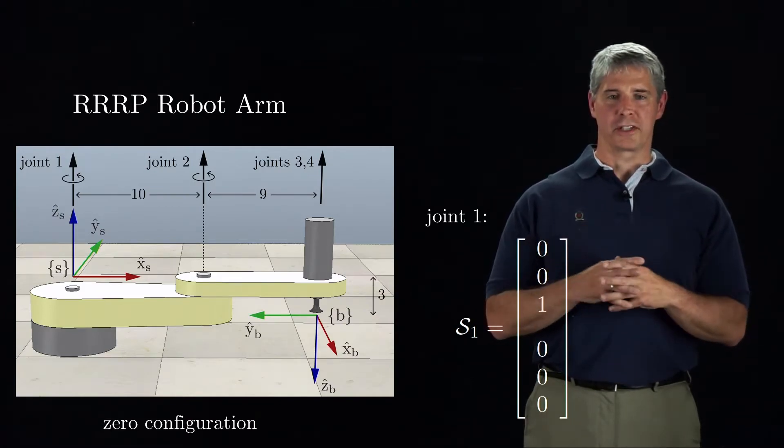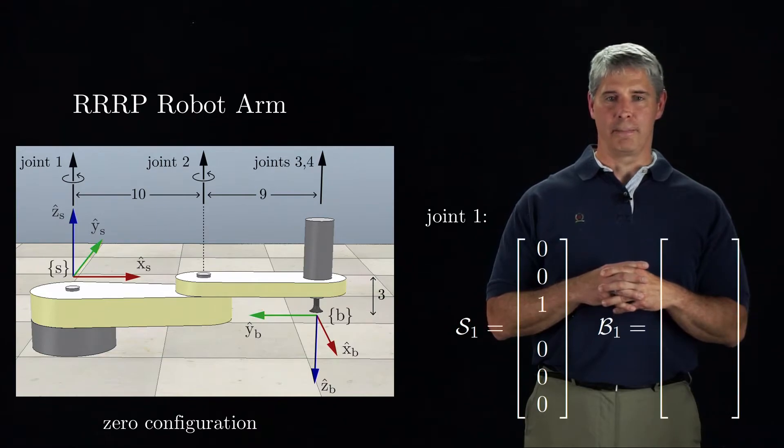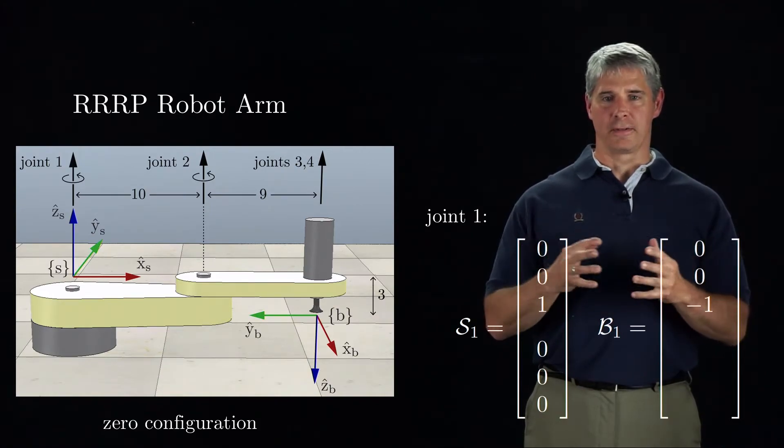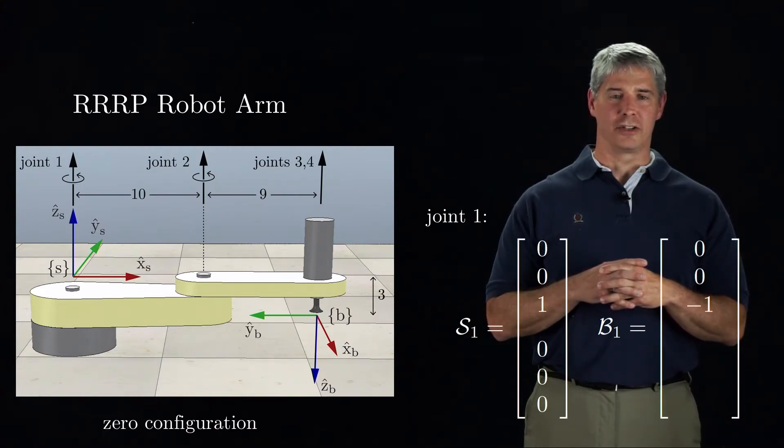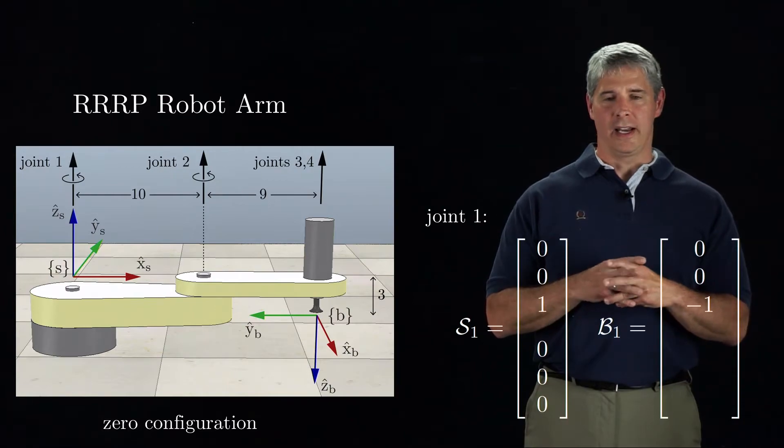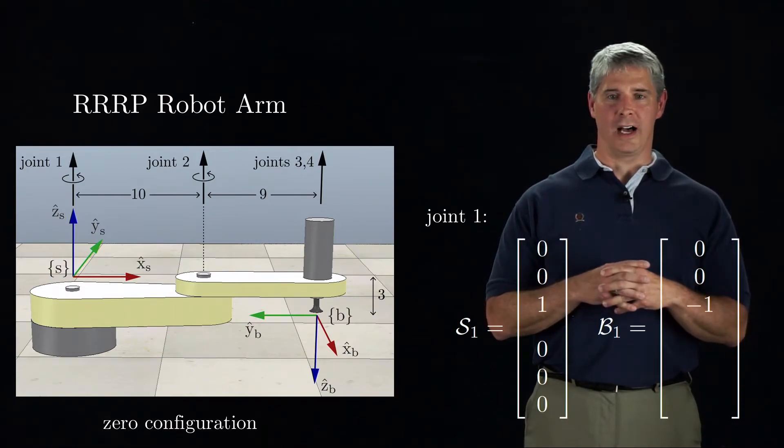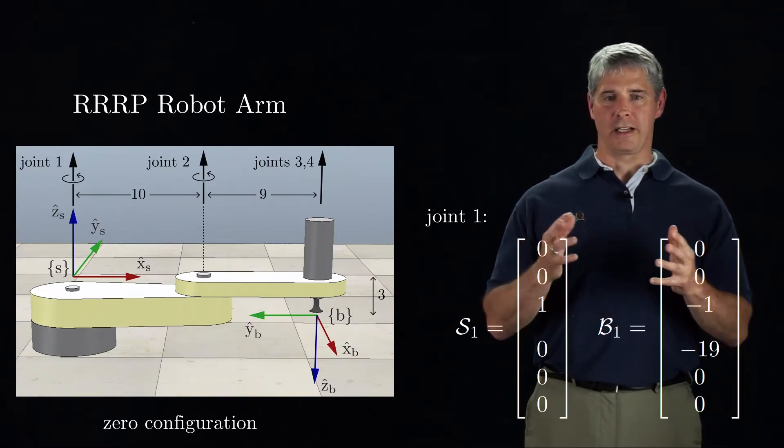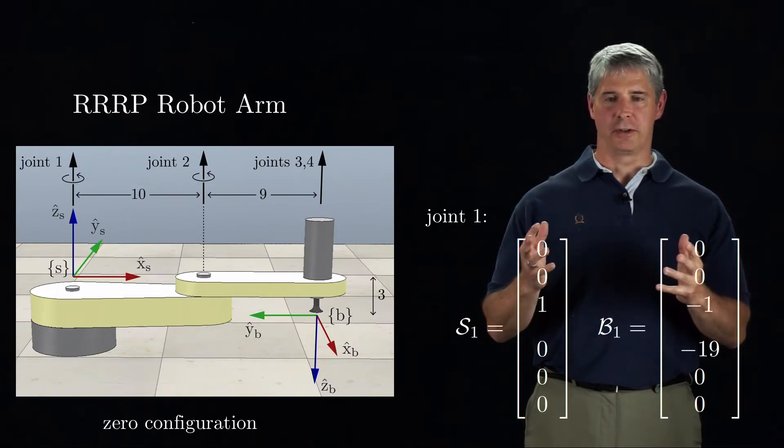We can also express the screw axis as B-1 in the B-frame. The joint axis is in the negative z-B direction, so the angular component is [0,0,-1]. A unit angular velocity about the joint one axis induces a linear velocity at a point at the origin of the B-frame, and it is apparent from the figure that this linear velocity is 19 units in the minus-x-B direction. This should be readily apparent from the figure. You shouldn't have to do any math.